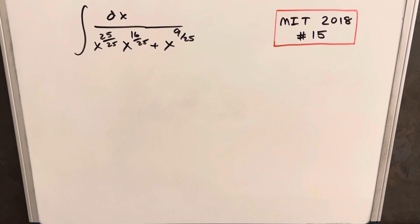Hey, we have an integral from the MIT Integration B 2018 problem number 15: integral of dx over x to the 25 over 25 times x to the 16 over 25 plus x to the 9 over 25.